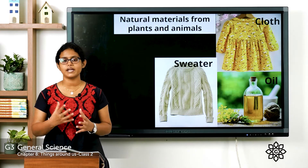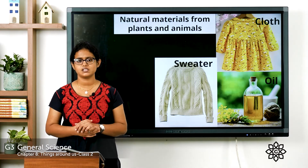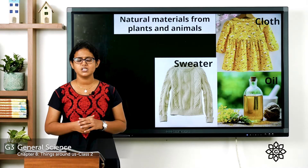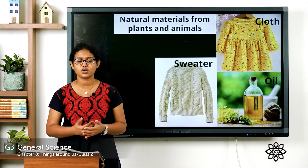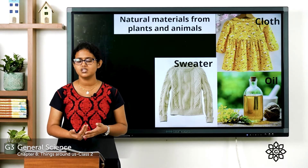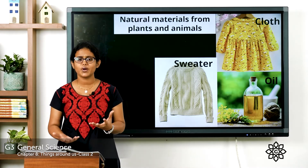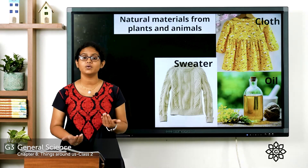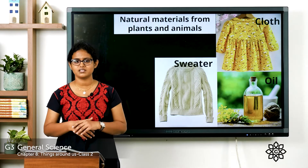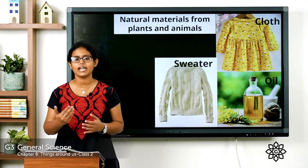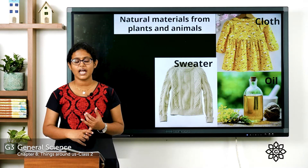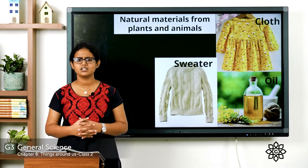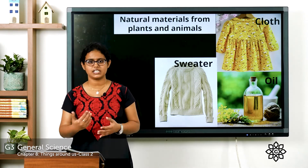We obtain natural materials from plants and animals — like wool, cotton, and oil. We get cotton from the cotton plant and use it to make cotton clothes. We get wool from the hair of sheep and goat and use it to make woolen clothes. Leather comes from the skin of dead animals like camel and goat, and is used to make shoes and purses.